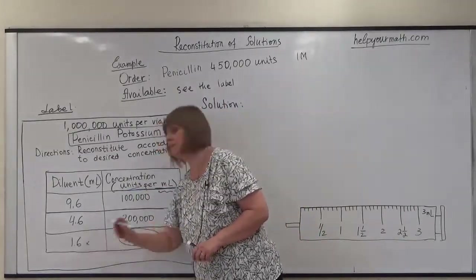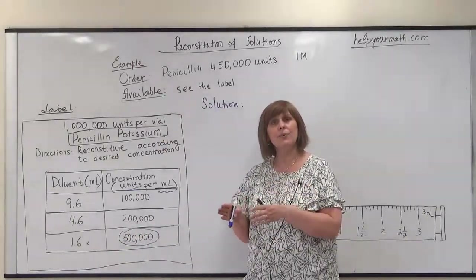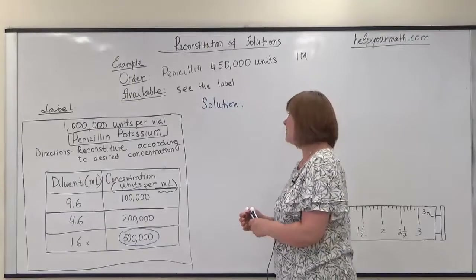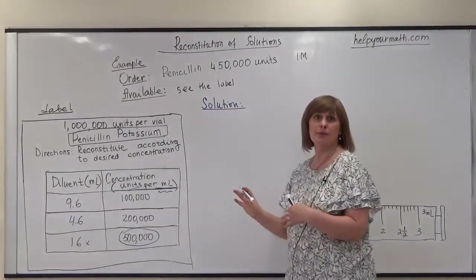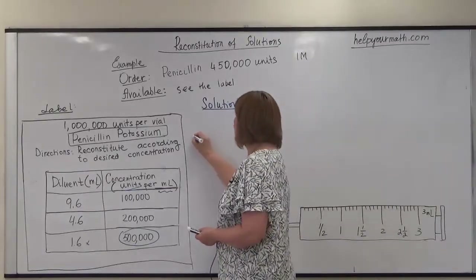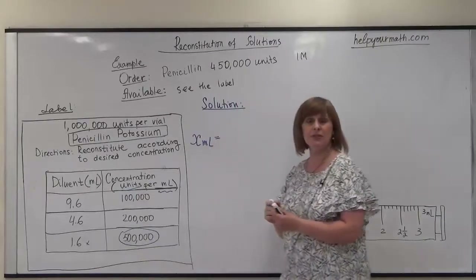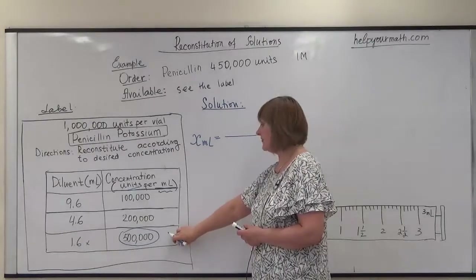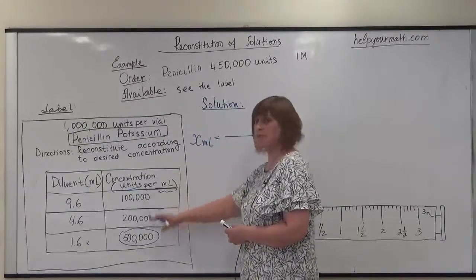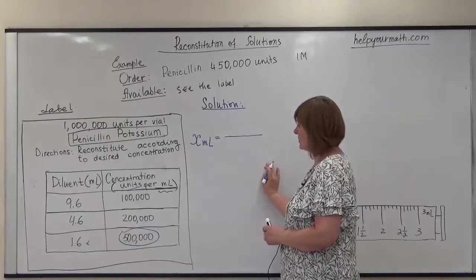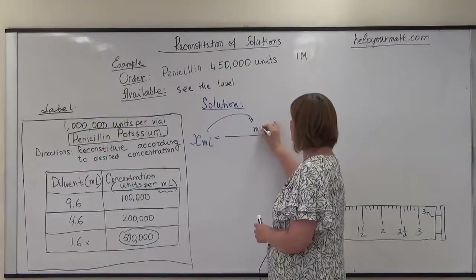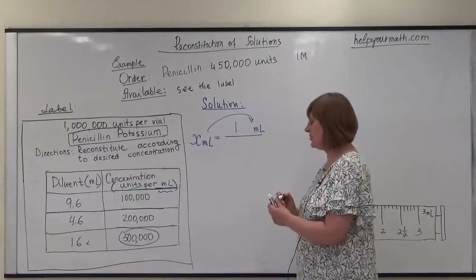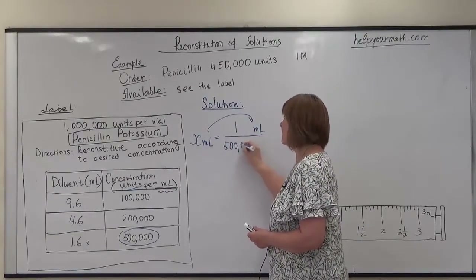Note: not 1.6 milliliters — we need to add 1.6 milliliters of diluent to make that concentration, so be careful how you set up the method. We will solve this problem using the dimensional analysis method. We need to calculate x milliliters, so we start with the target unit, milliliter, in the numerator. Since the closest concentration is 500,000 units per 1 mL, we write 1 mL over 500,000 units as our first ratio.